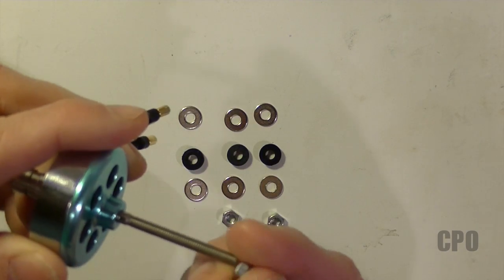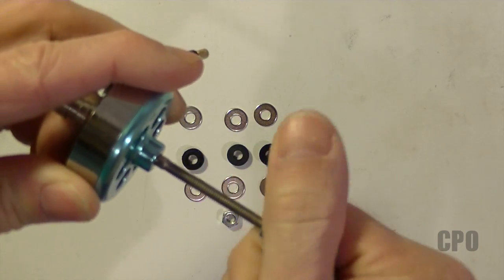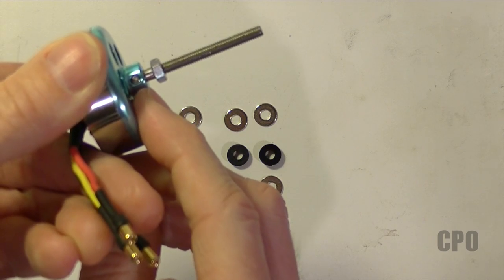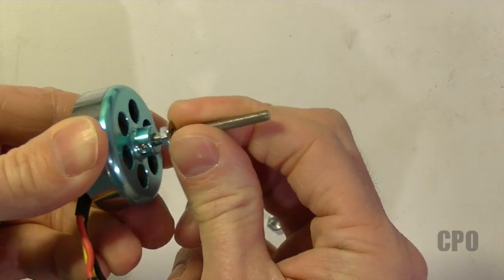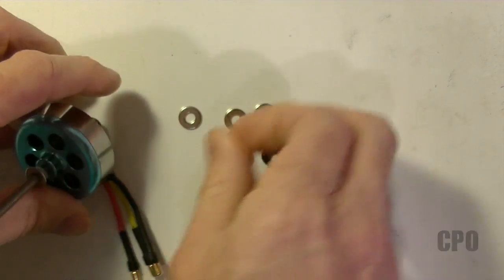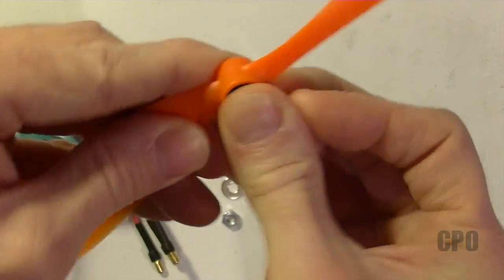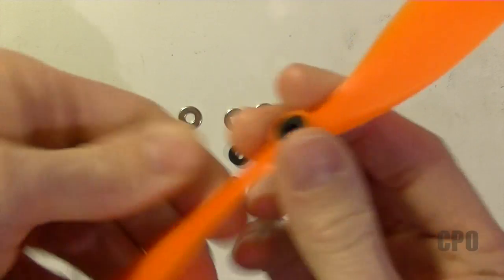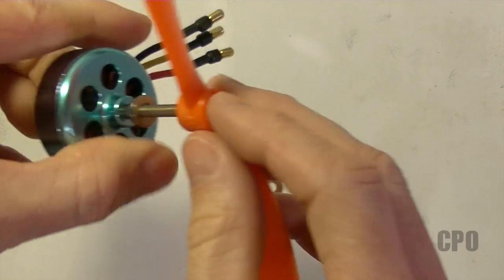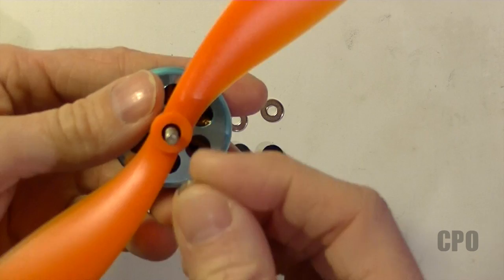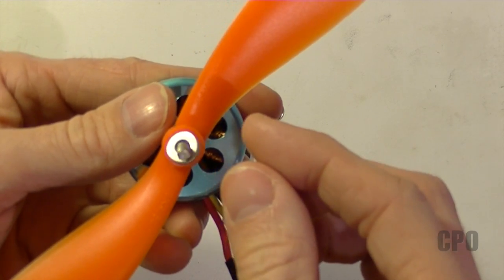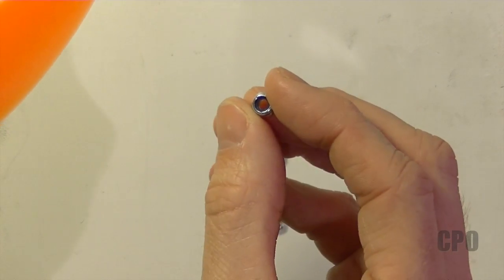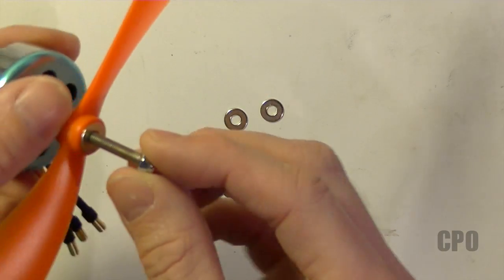This is just a four millimeter metric standard nut that's going to go at the base of the shaft right above the bell housing. This will prevent putting too much pressure on the bell housing when you tighten the entire assembly down. After this nut, next we'll go on the washer and then the prop with prop adapter.